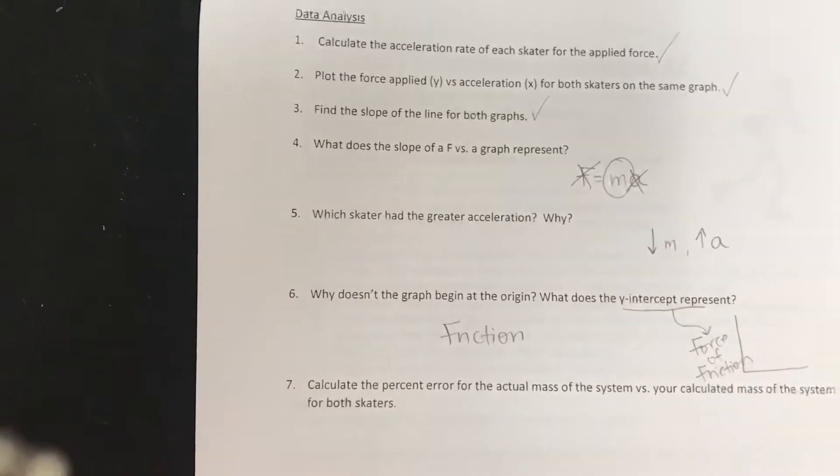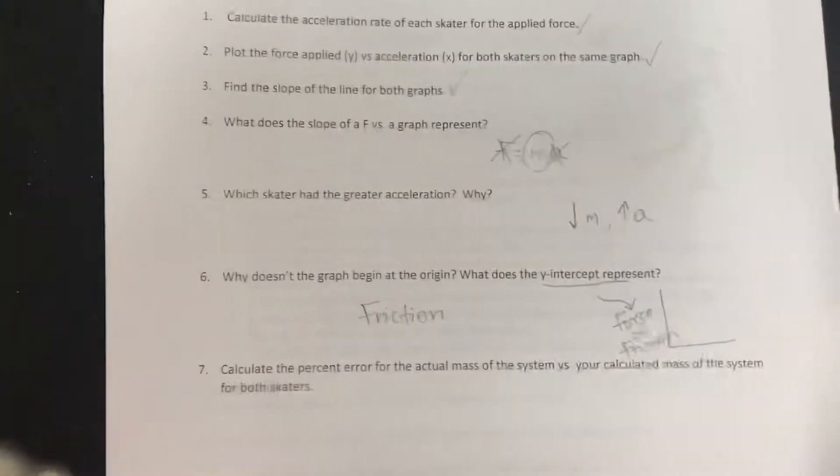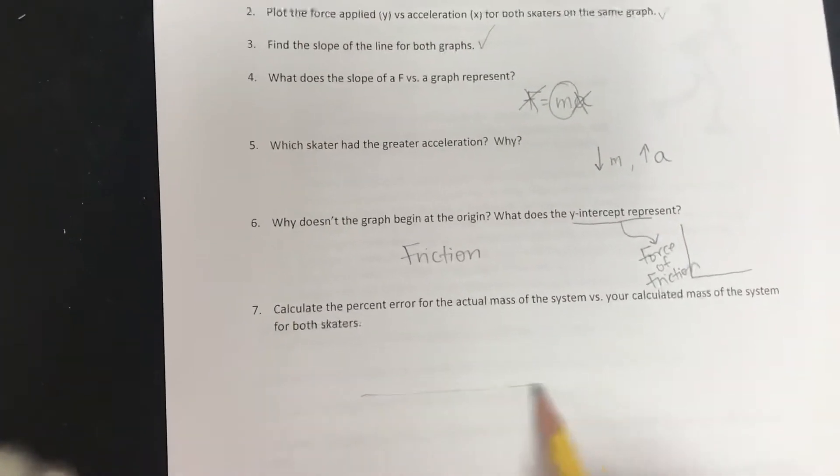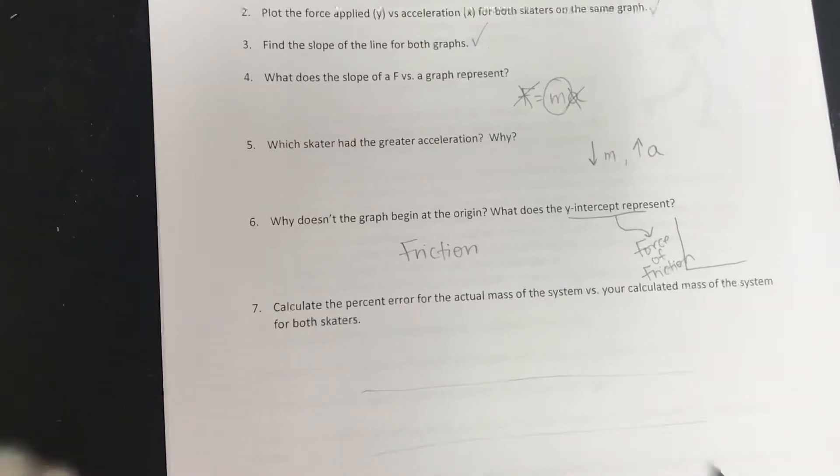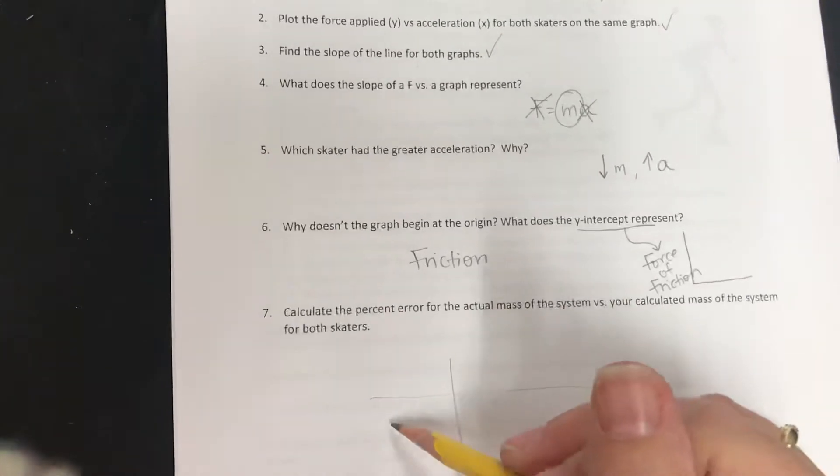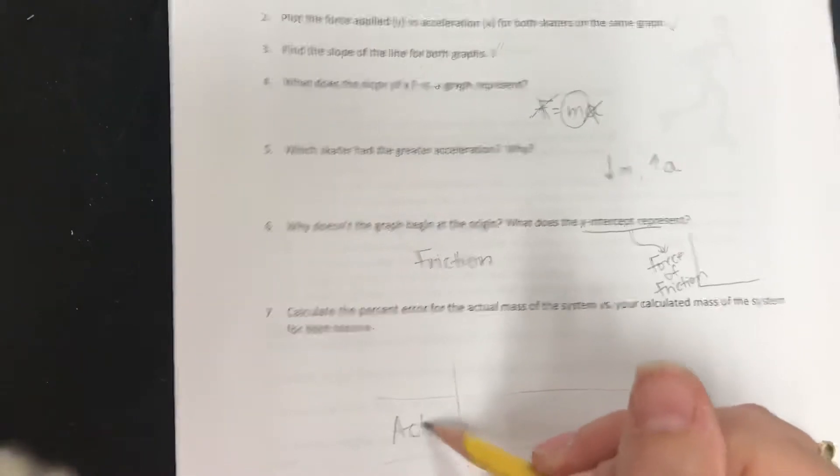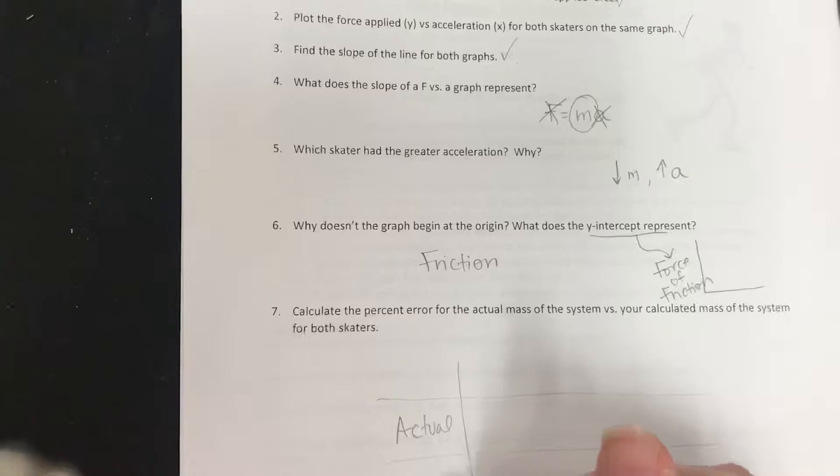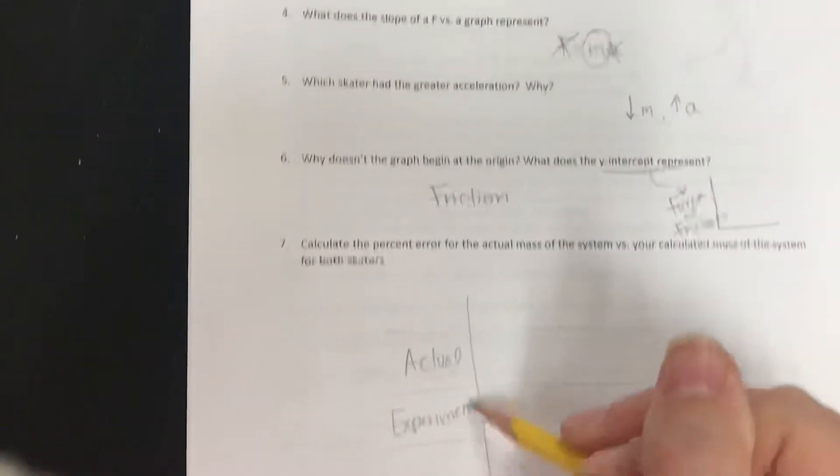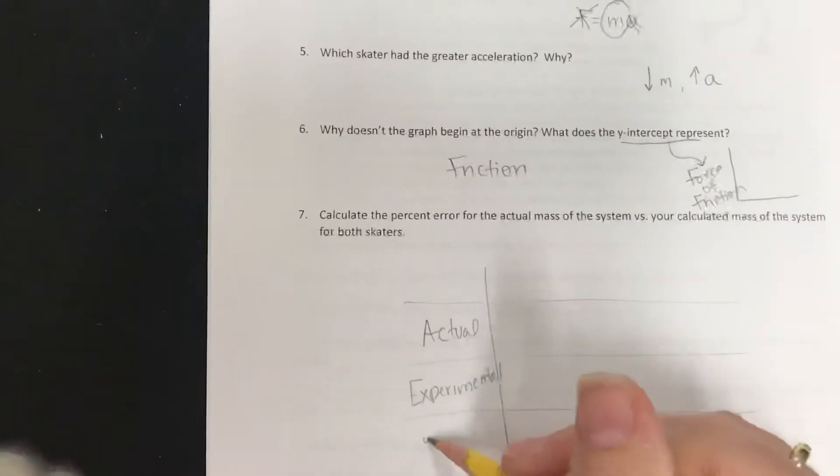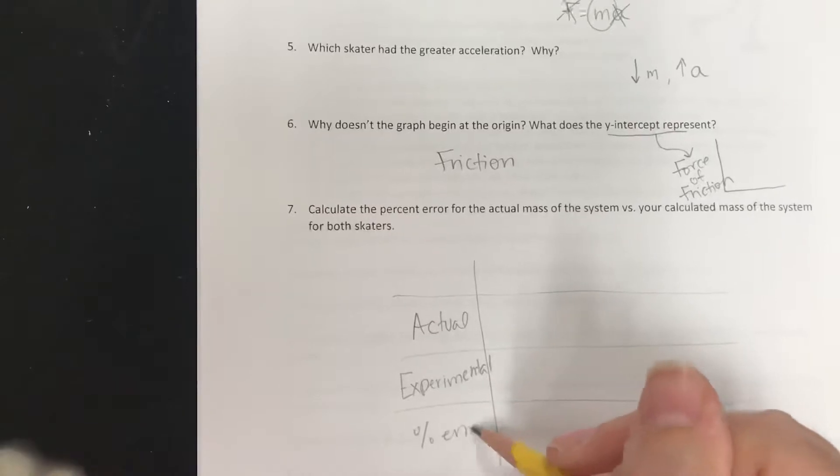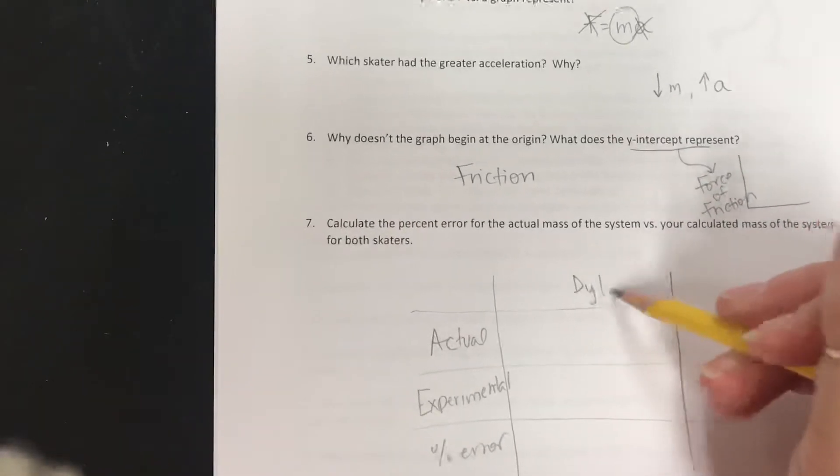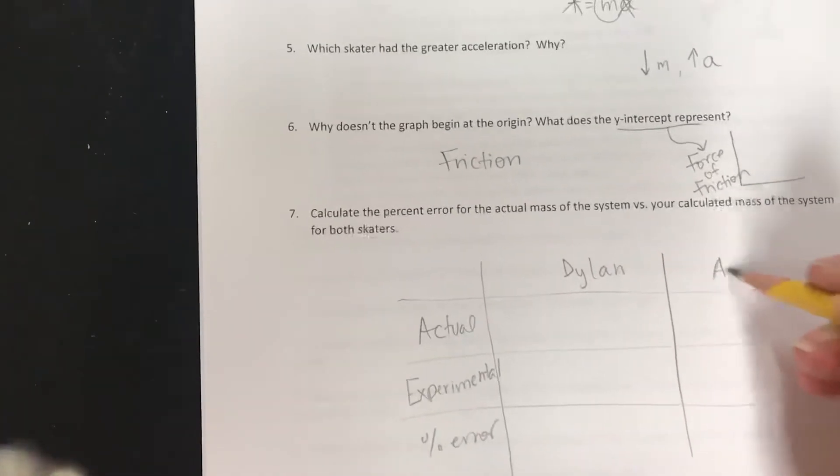I hope that makes sense. If not, let's talk about it on Monday. All right, now in terms of what we're going to do down here, I want you to make a data table. In this data table, we're going to have their actual values, their experimental value, and their percent error. You're going to make two different ones. This one will be for Dylan, and this one will be for Adam.